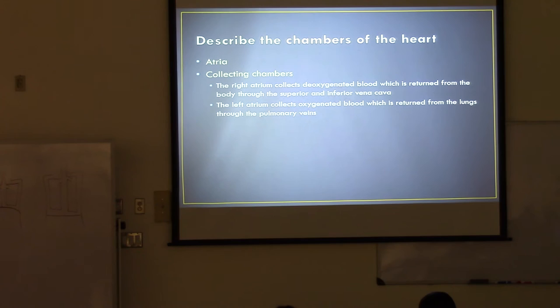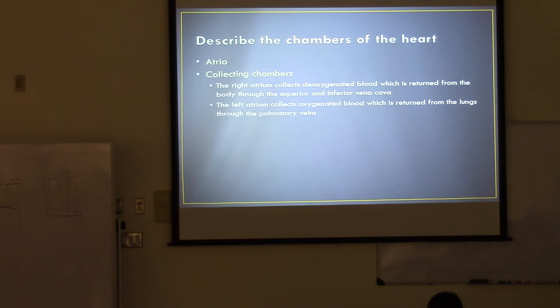Now we're going to go to the chambers of the heart. We start off with the atria. The atria are called the collecting chambers because they receive blood from some major vessels. The right atrium collects deoxygenated blood, which is returned from the body through the superior and inferior vena cava.